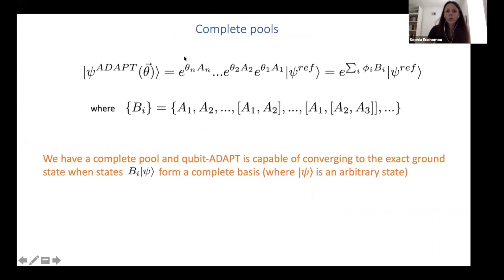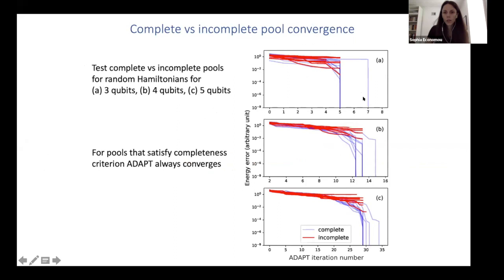So this leads to the notion of complete pools. So there exists pools which if I act on them on any reference state, I can get any other state. And the criterion for finding complete pools is to take all the operators in the pool, take their commutators, take the commutator with a commutator until you run out of operators, and then require that this set B that emerges forms a complete basis when it acts on an arbitrary state. So we indeed checked that this is the case. So these are the ones that satisfy this criteria. They always converge. And these are the ones that don't.